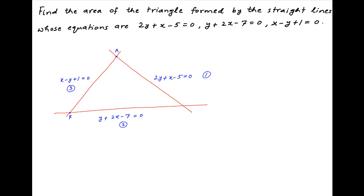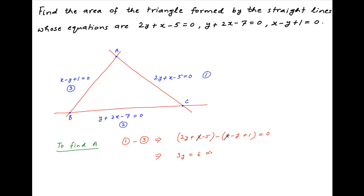Let's denote the three vertices of the triangle by A, B, and C. To determine the coordinates of vertex A, we subtract equation L3 from equation L1. We get 2y plus x minus 5 minus (x minus y plus 1) is equal to 0. x cancels and we get 3y equals 6, which implies y equals 2. Using equation L3, x equals y minus 1 equals 1. Therefore, the coordinates of point A are (1, 2).